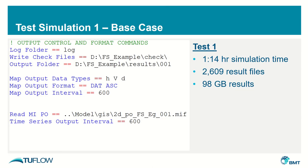We need somewhere to start, so this will be the base case for us. We ran the model using 2FA HPC and GPU hardware. The model took 1 hour 14 minutes to run. It produced 2,600 result files with a collective footprint of 98GB. Both those numbers are excessively large.